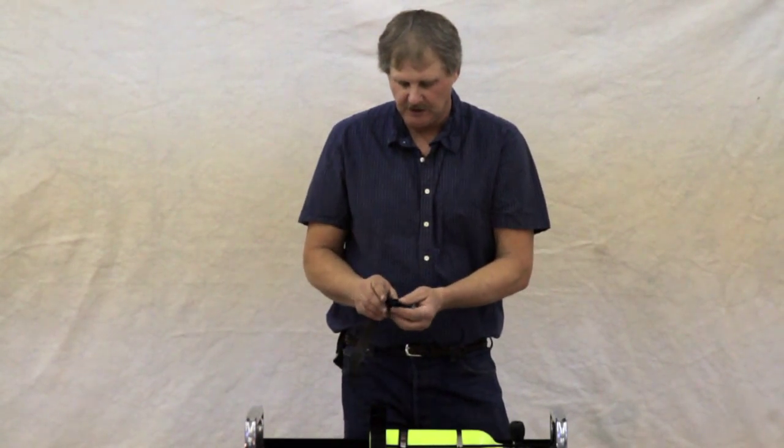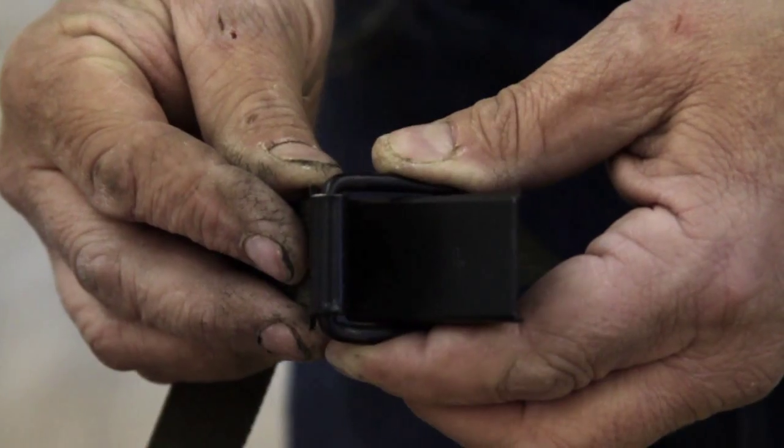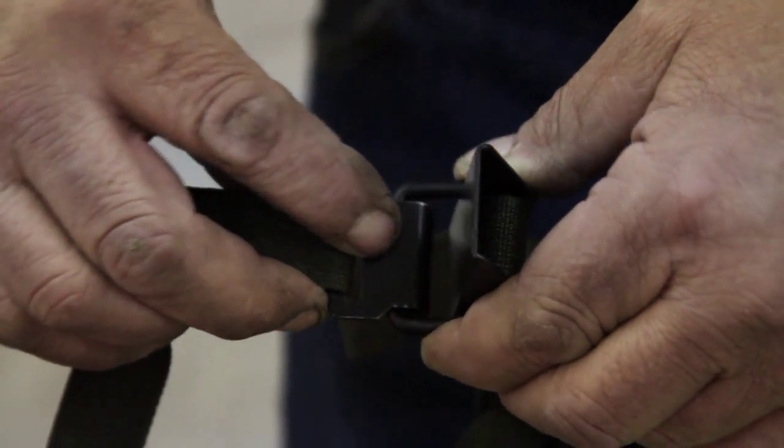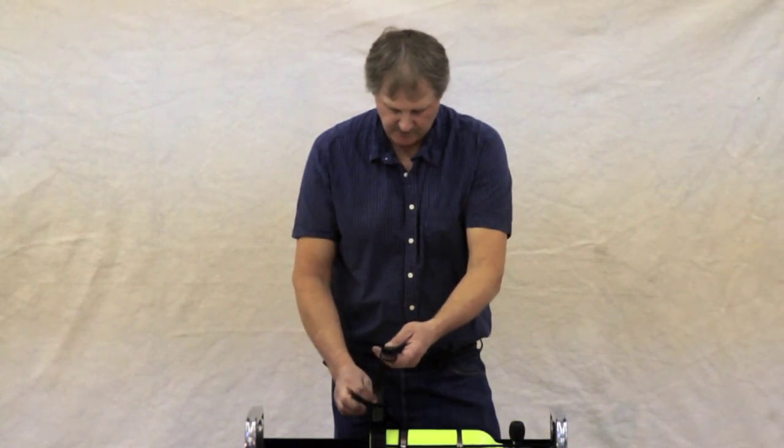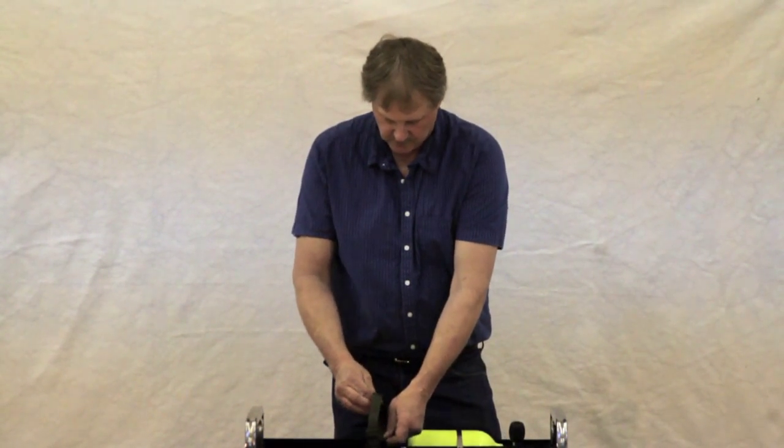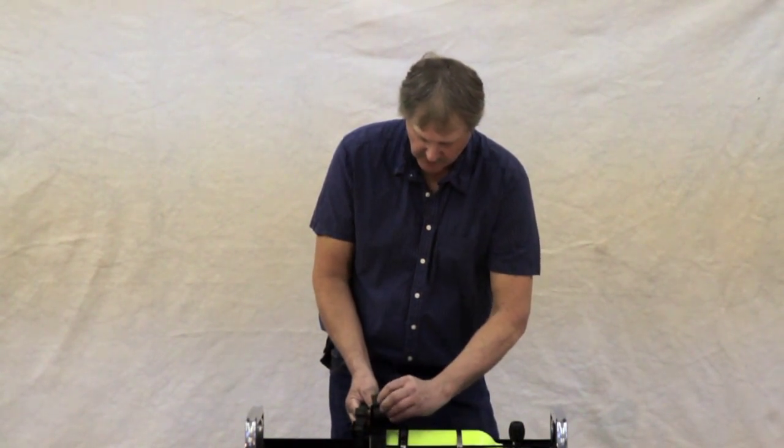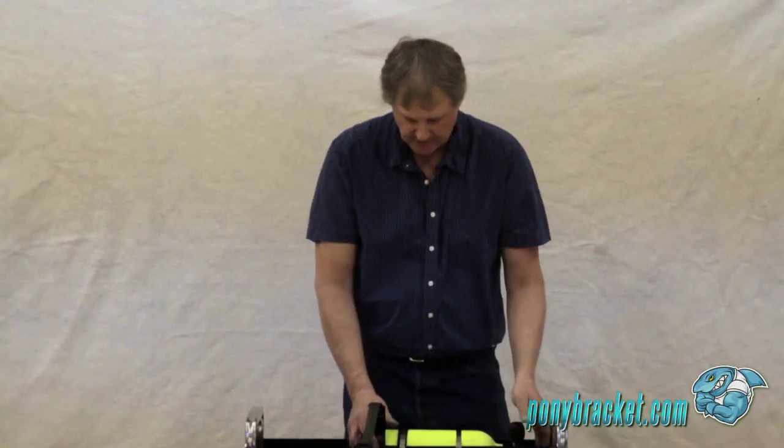This goes with the flat part of the cam buckle towards the center. Come in from the outside. Weave it through. Bring it back up through the same one you started in from the opposite direction. That's it.